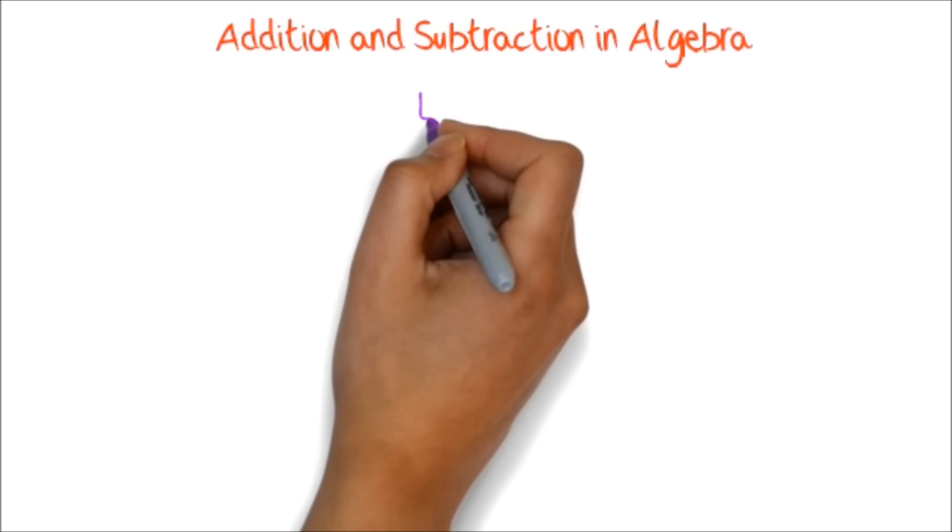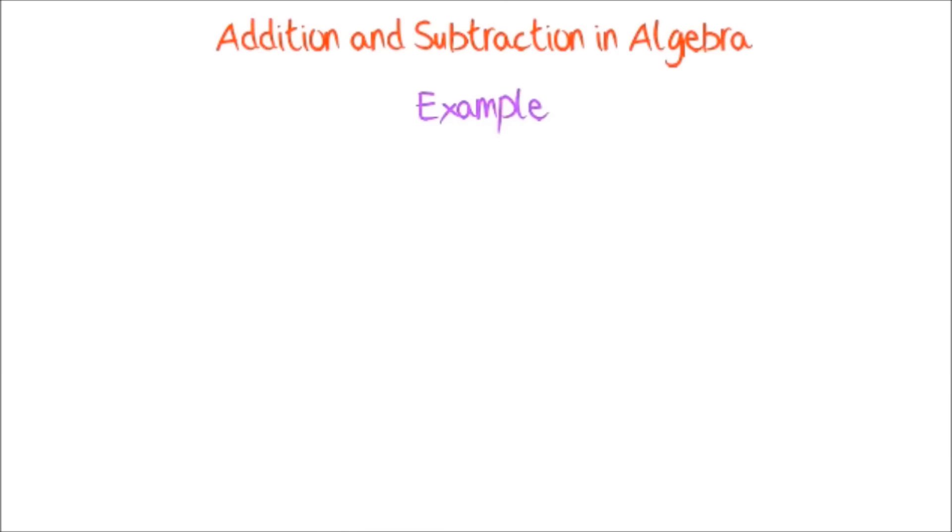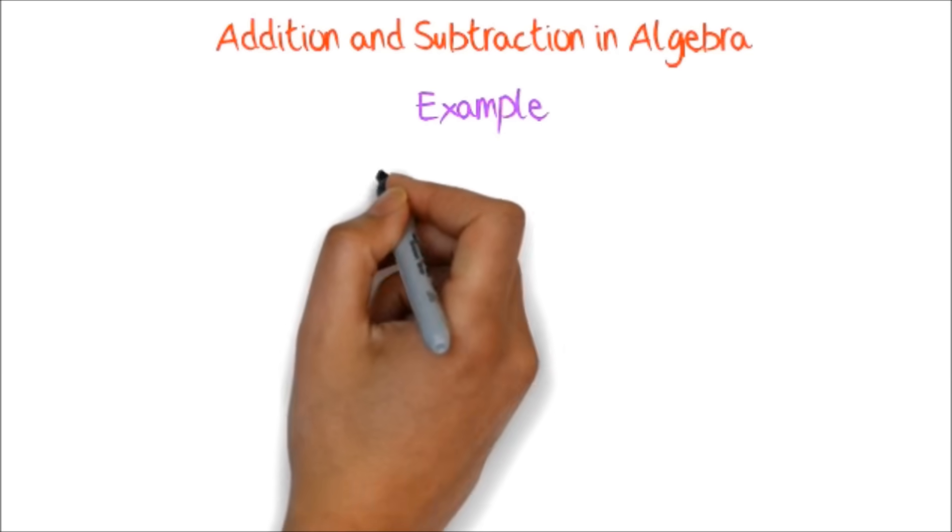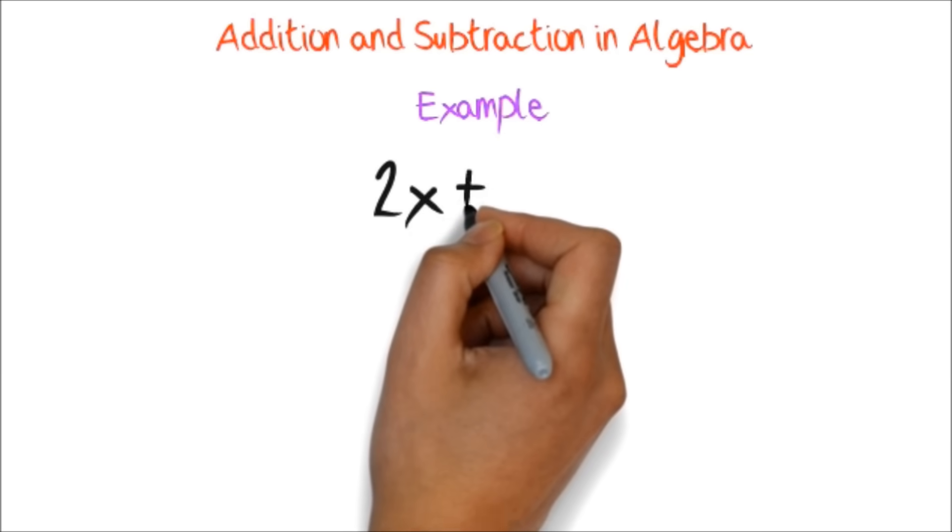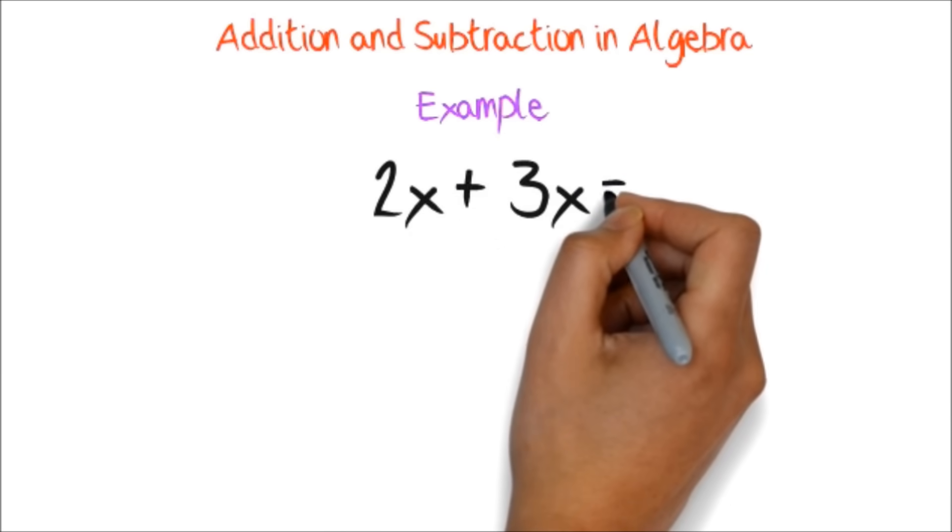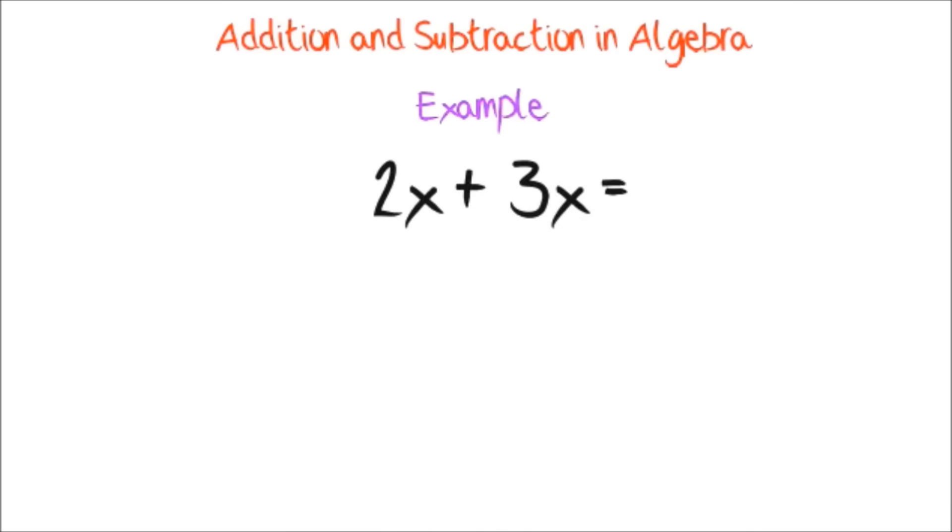Addition and Subtractions in Algebra. We can only add things if the letters and their exponents following them are exactly the same. Example, we can add 2x and 3x because they both have x following the numbers.